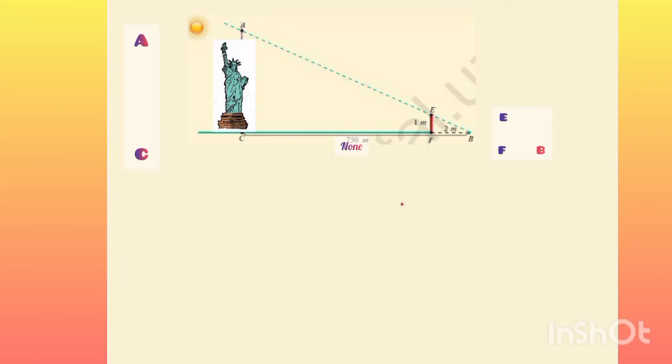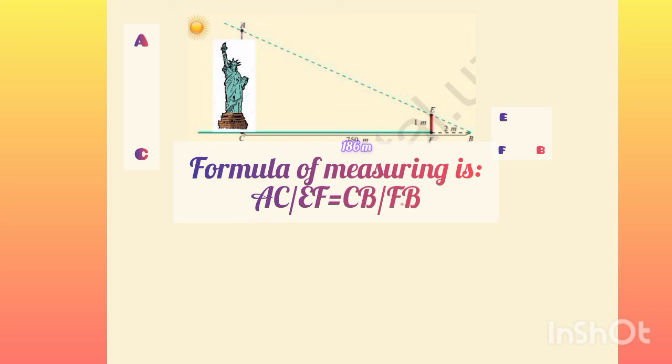Let's explain how we can measure the statue of liberty with points A and C, E, F and B. When we measure the shadow of the statue, it's 186 meters.